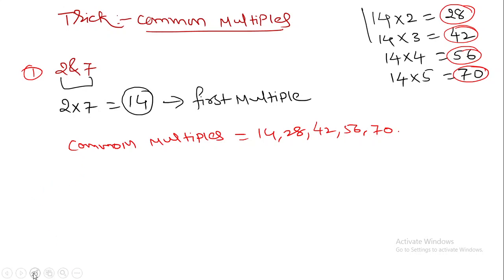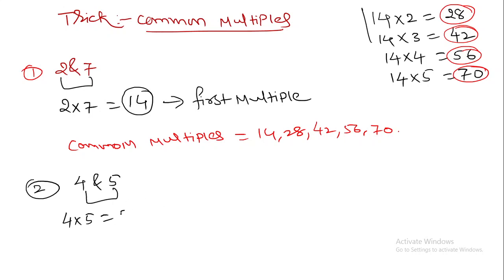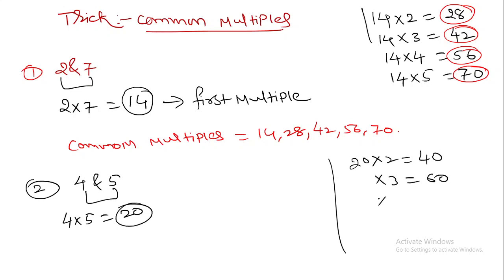Let us take another example: four and five. These two numbers are different. To find the common multiples, first multiply four and five. Four multiplied by five is twenty — this is your first multiple. Then multiply twenty by two to get forty, by three to get sixty, by four to get eighty, and so on. In this way you find the common multiples.